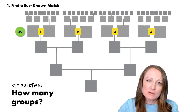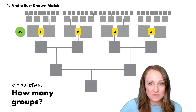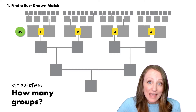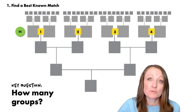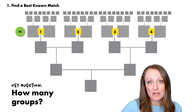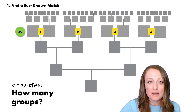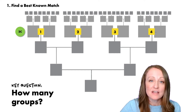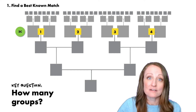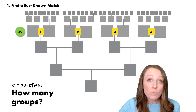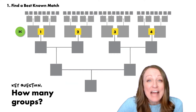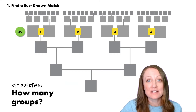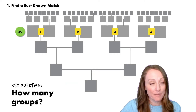It starts by understanding how many groups you want to divide your match list into, because your match list can be divided into a distinct number of groups. If you look at this pedigree chart where yourself is at the bottom, then your two parents above you, you've got four grandparents and then eight great-grandparents. You could divide your entire DNA match list into these four groups representing your great-grandparent couples.